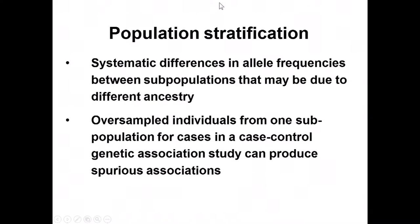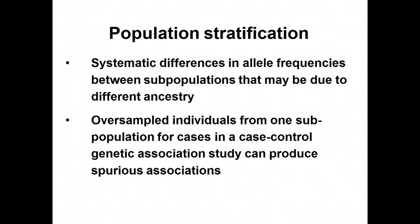Population stratification refers to systematic differences in allele frequencies between subpopulations due to different ancestry. In a case-control study, oversampling individuals from one ancestry group in the cases versus controls can generate spurious associations. The same principle applies to quantitative trait studies as well.